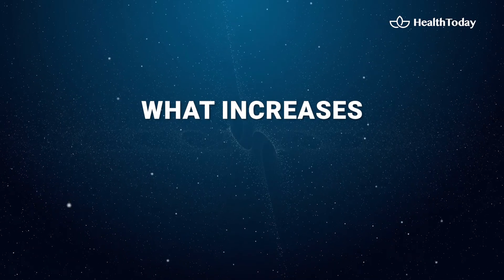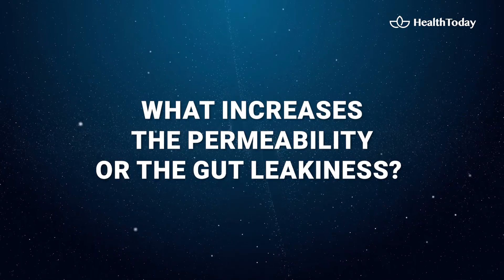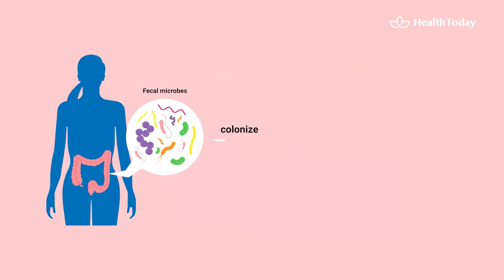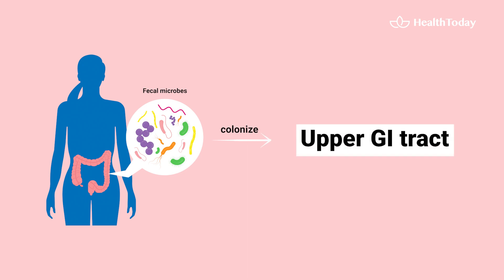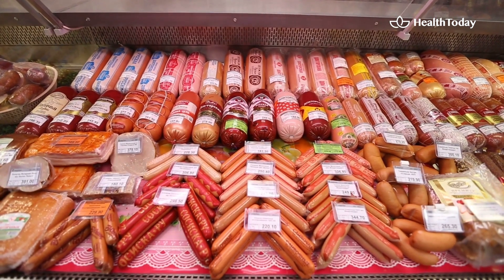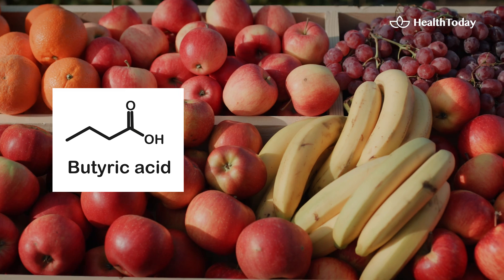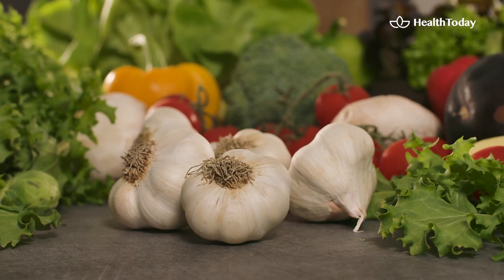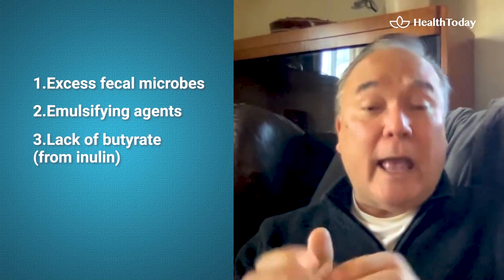What increases the permeability, or the gut leakiness? An excess of fecal microbes. Fecal microbes colonize the upper GI tract, which is more easily penetrable. Other things include emulsifying agents that dissolve the mucous barrier, and lack of butyrate — that nutrient that comes from feeding microbes with things like inulin. So there's a whole long list of things that increase gut permeability.